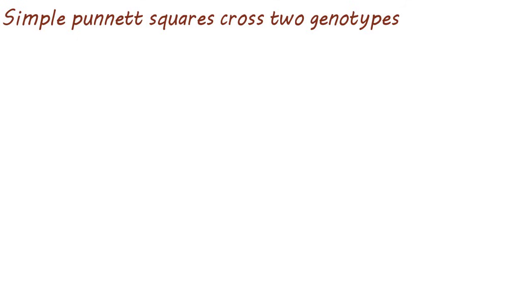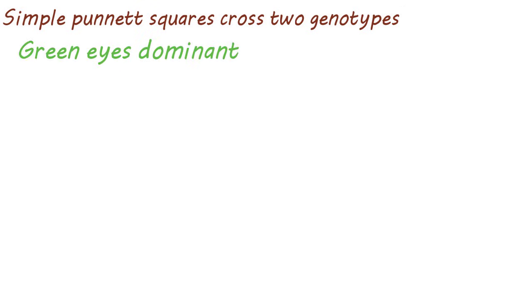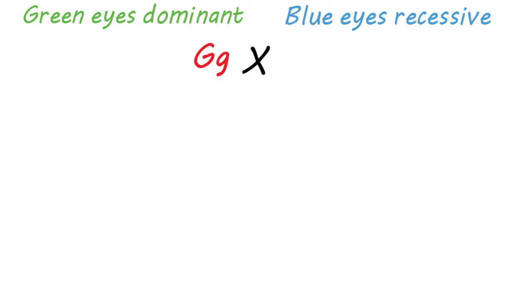Let's look at an example of a genetic cross for eye color, with green eyes being dominant and blue eyes being recessive. We'll use big G, little g for the maternal genotype and little g, little g for the paternal. So this is our cross — the mother has green eyes and the father has blue eyes. We want to see the probability that their offspring will have either green or blue eyes.